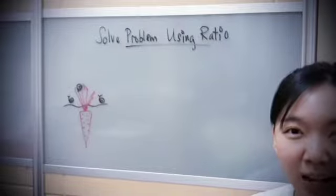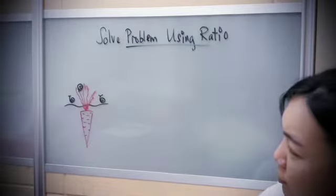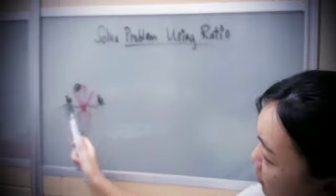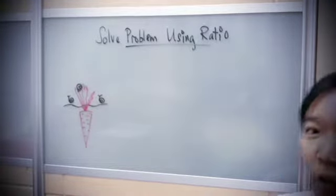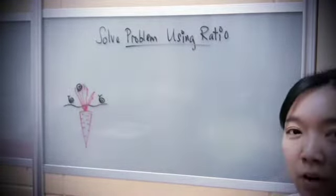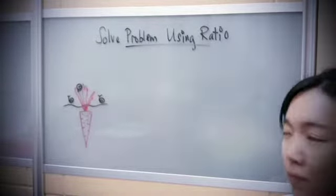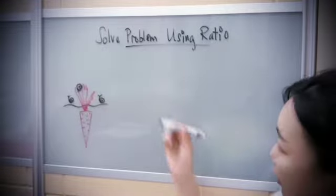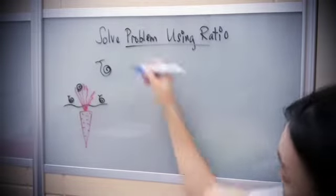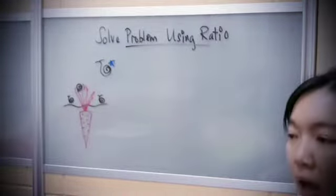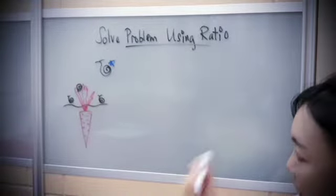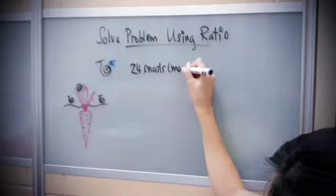Hi, today I'll be sharing how you can solve problems by using ratio. First, understand the story. It looks like a farm — there's a carrot and there are some snails. As a farmer, I want to estimate how many snails are in my farm. So I go to the farm and pick 24 snails, put a mark on the shell, and release the 24 snails back to the farm again.